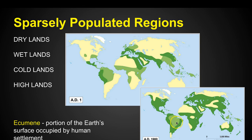People have naturally needed to spread out, so the ecumen is much larger — but you still don't see people living in the desert or up in the Arctic Circle of North America and Asia.